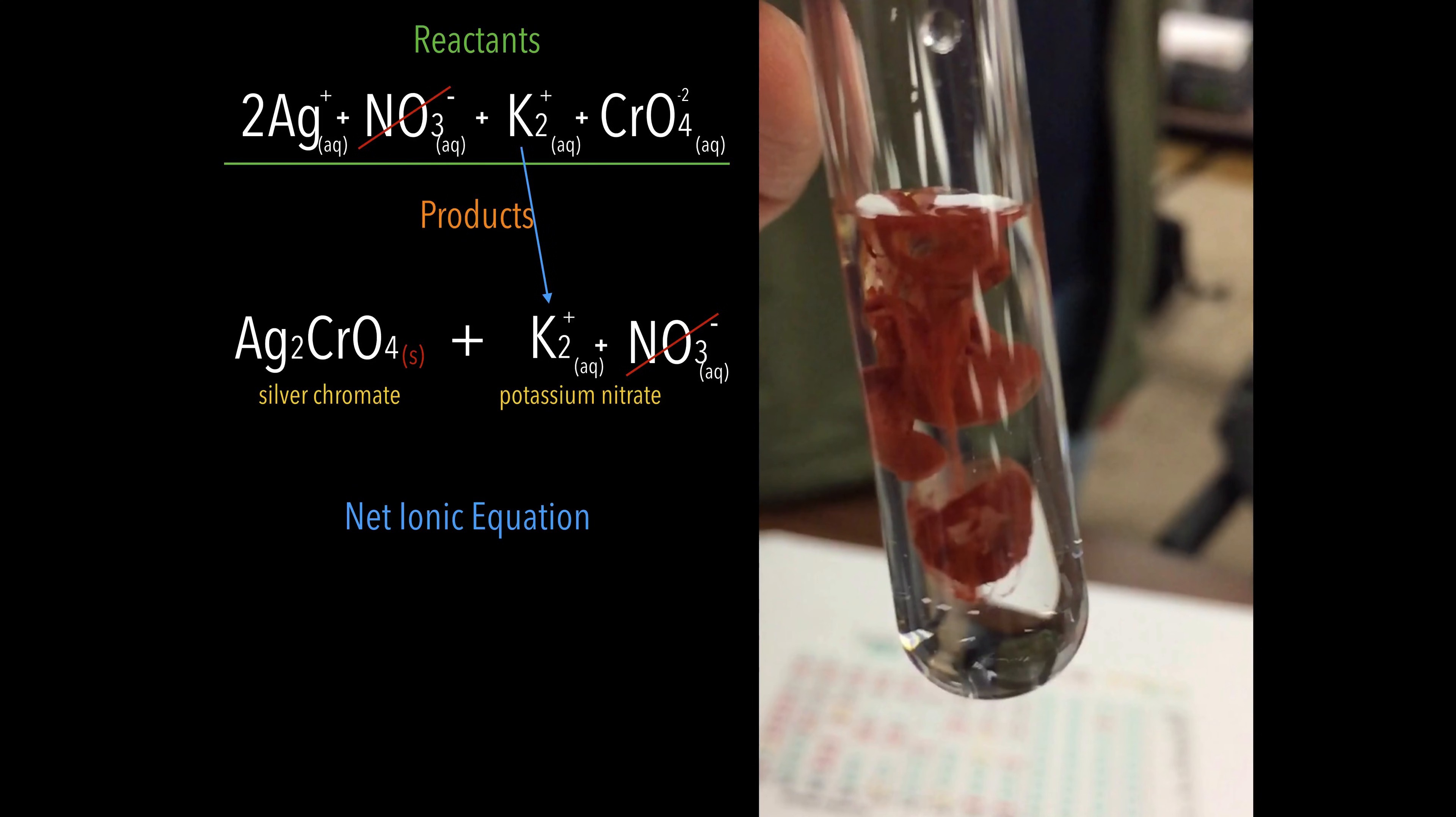Next, potassium. Potassium as well remains the same, aqueous to aqueous. So it does not change; it is not involved in the reaction. Lastly, I look at chromate. Chromate is in an aqueous state on the reactant side but in a solid state on the product side, so we had a change of state. That means something happened to chromate. It was involved in the reaction.